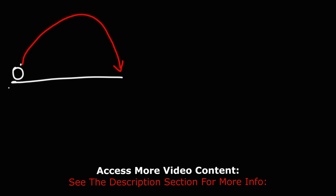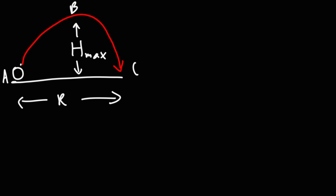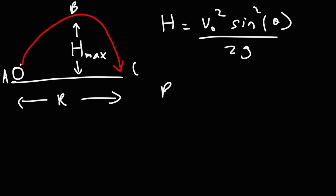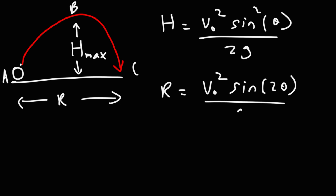Now let's move on to the next trajectory. A ball is kicked off the ground and returns to the ground — let's call the launch point A, the peak point B, and the landing point C. The maximum height equals v_initial² · sine²(θ) over 2g. The range equals v_initial² · sine(2θ) over g. If you know the angle and the initial velocity, you can determine the maximum height and the range. Sometimes you may need to find the initial launch angle given the height and range.